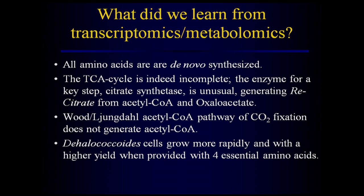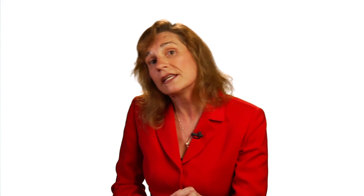What did we learn from transcriptomics and metabolomics? We learned that Dehalococcoides is able to de novo synthesize all 20 amino acids, even though the original genome annotation said it could not. We learned that the TCA cycle is indeed incomplete and figured out how those 20 biosynthetic pathways were complete without a full TCA cycle. We determined that the Wood-Ljungdahl carbon fixation pathway does not generate acetyl-CoA in this microorganism. We also learned that Dehalococcoides cells grow rapidly when you add four essential amino acids to the medium — even though they can make those amino acids themselves, they grow more effectively when provided with them.